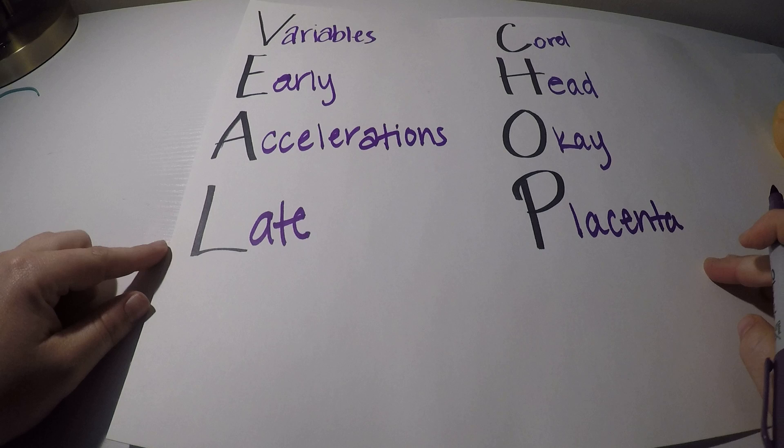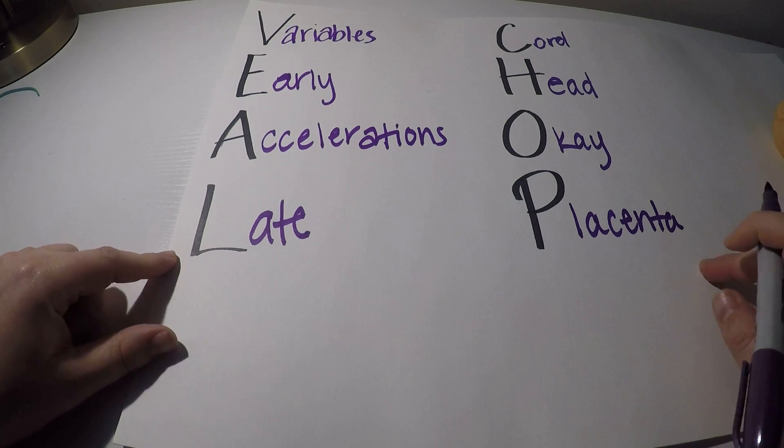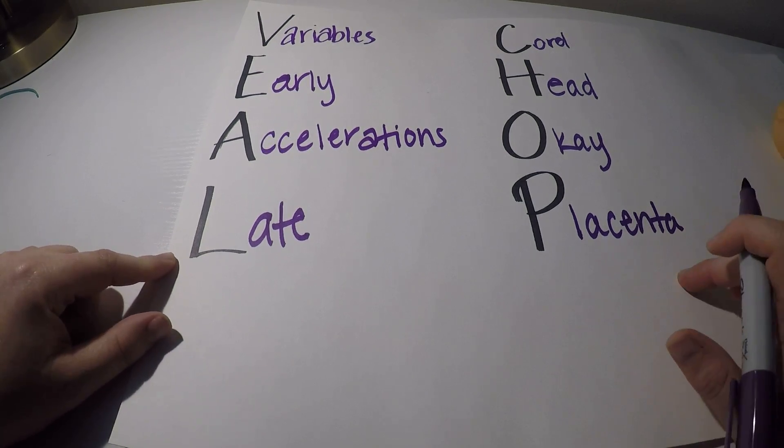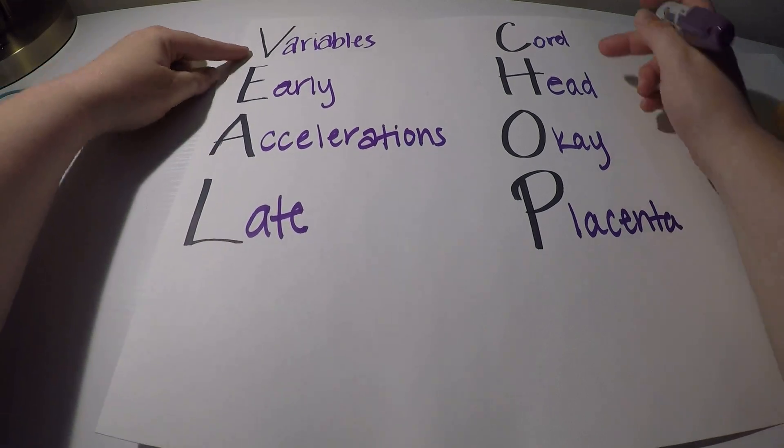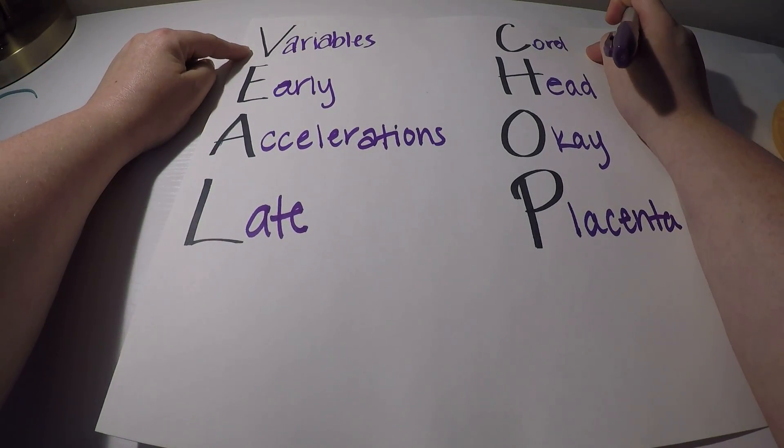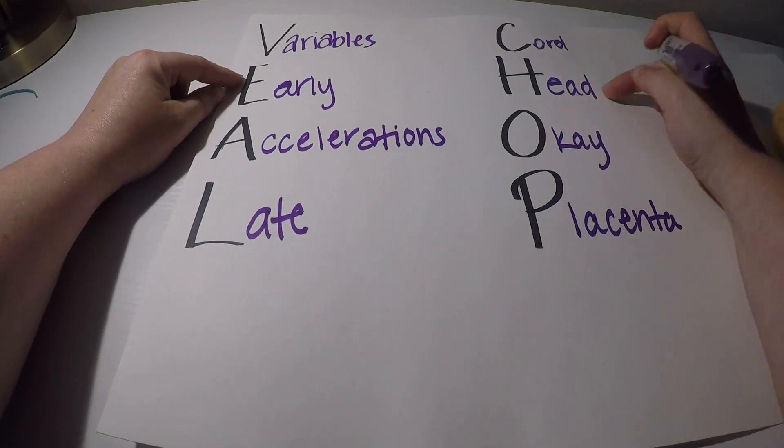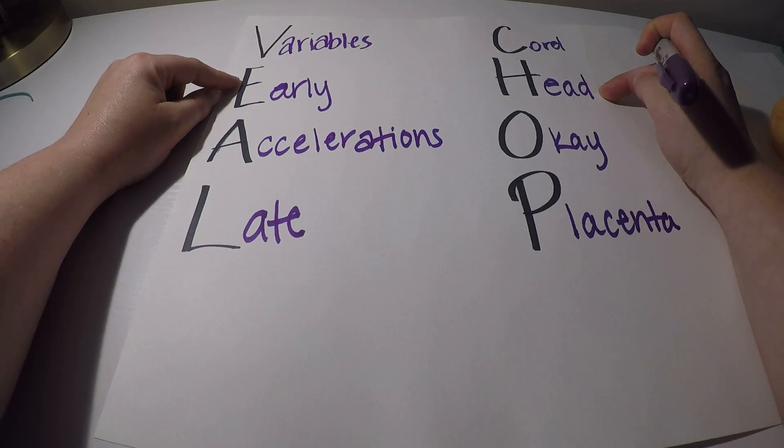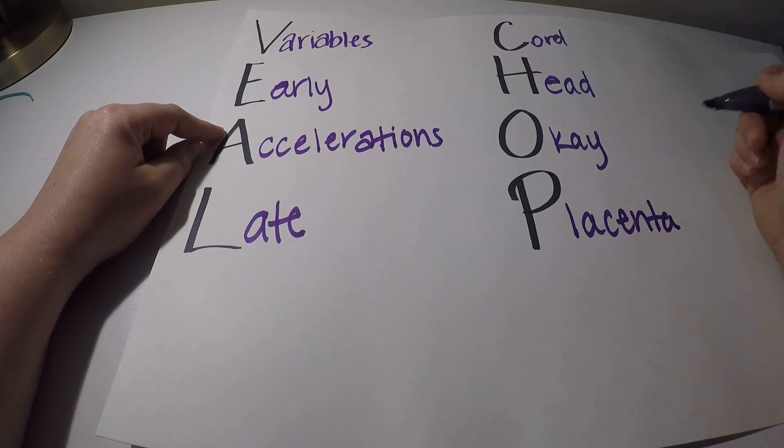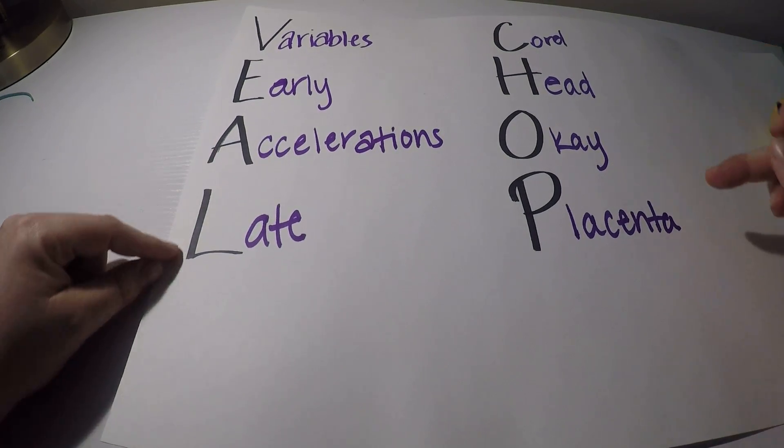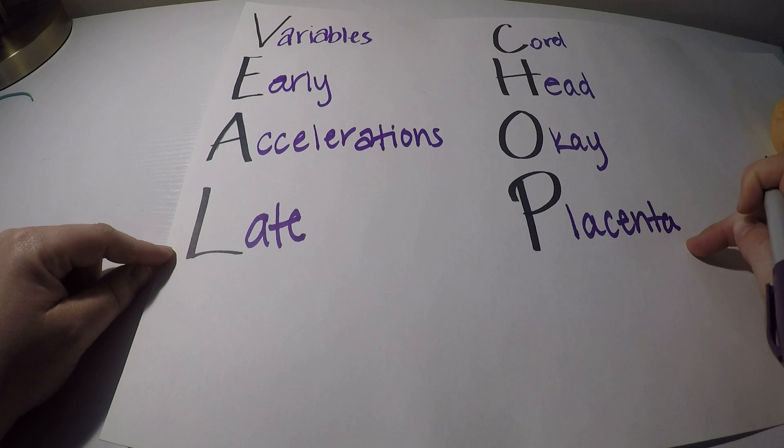So if you can remember this mnemonic, this is going to help you remember what causes the change in the heart rate and what you need to do to fix it. So variables are caused by cord compression. The biggest thing for that is position change. Earlies are caused by head compression. Those are okay. We don't worry about those. You can't really do much about that. Accelerations, those are okay. In fact, those are great. We love to see accelerations. And then lates are problems with the placenta. So we need to increase our placental perfusion.